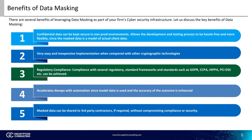Data masking is an inexpensive and easy-to-implement control. To correctly implement it, sensitive data is identified, then categorized based on the context of use. Once that is done, proper access control is provided either to the identified sensitive information or the entire database. As per the requirements, data masking is performed and distributed to the non-prod environment users. The masking process can be achieved using many different techniques based on the context of the data, such as encryption, character scrambling, deletion, variance for numerical data, and substitution.